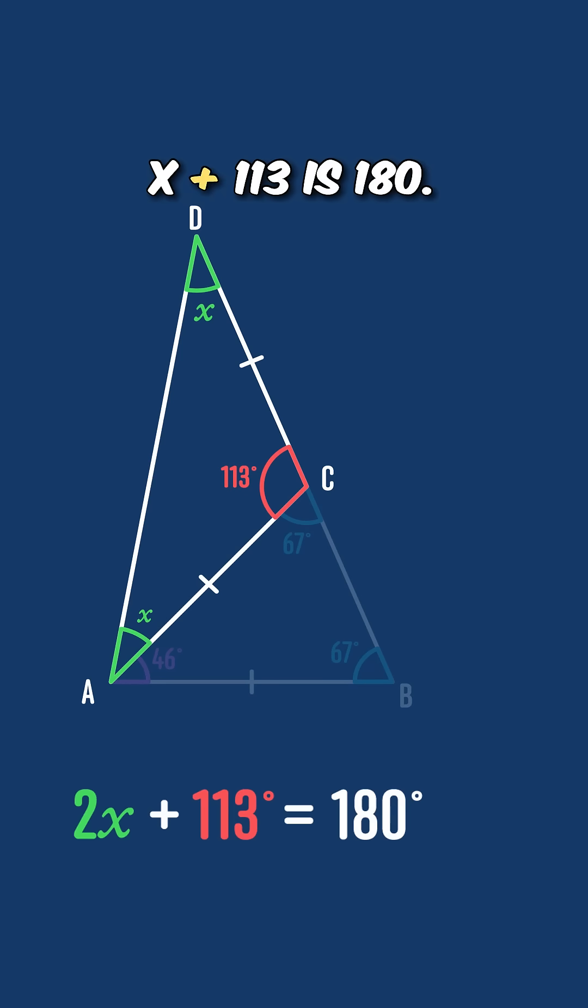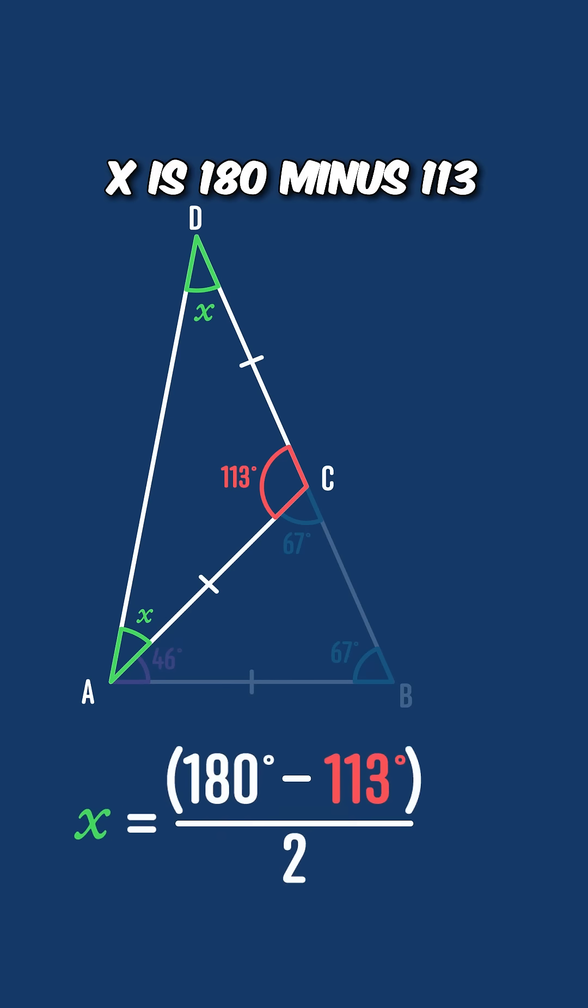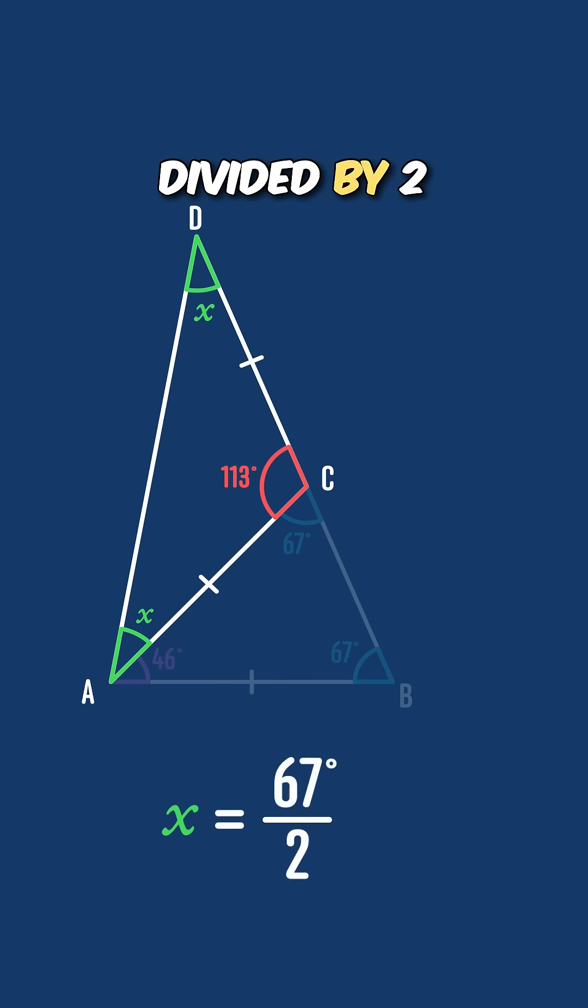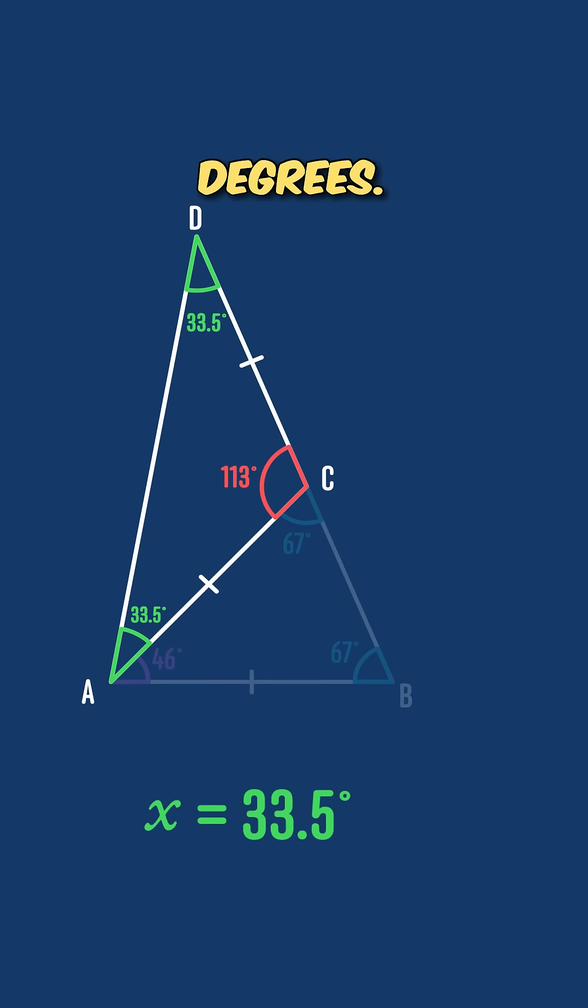So we've got 2x plus 113 is 180, and each of those angles and the angle we're looking for, x, is 180 minus 113 all divided by 2, that's 67 divided by 2, or 33 and a half degrees.